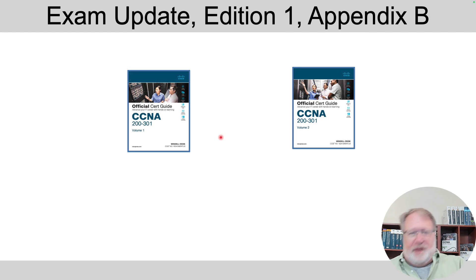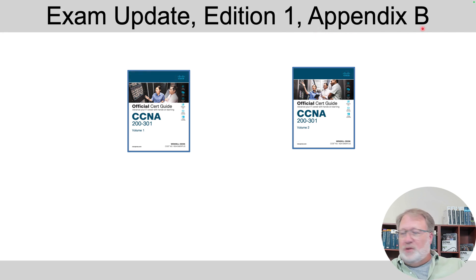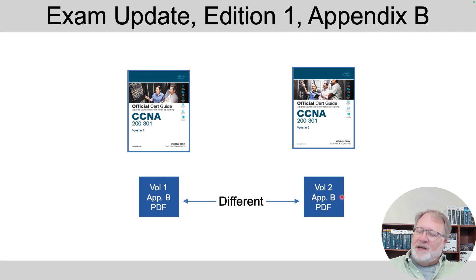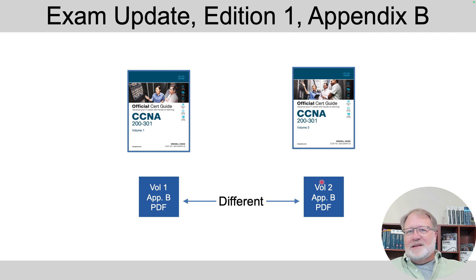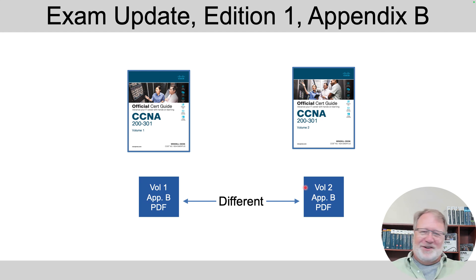But what if you have my edition one books and need to cover the content that changed in the interim 2022 update? We created content and put it in PDFs — it's a free download for anyone who owns the edition one books. Look in Appendix B of those books — called Exam Update — for instructions on how to go to the Cisco Press website and download the free content. It's a different Appendix B for each volume, so make sure you download each one. Read the content, learn it, be ready for the test. Unsurprisingly, this content is already integrated into the new edition two books.